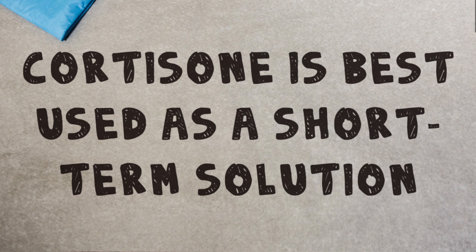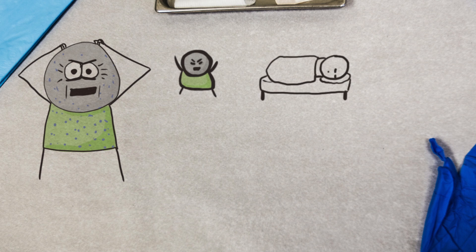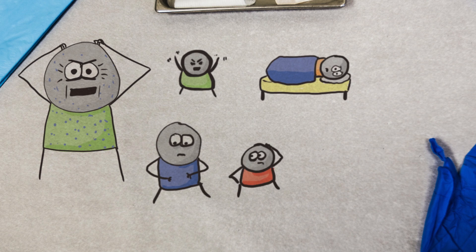Now, here's the thing. Cortisone is best used as a short-term solution. I mean, if you think about it, you don't want your body filled with stress hormones long-term, because there are side effects that we associate with having high stress levels. Namely, mood swings and sleep disturbances, hypoglycemia, decrease in the body's natural corticosteroid production.